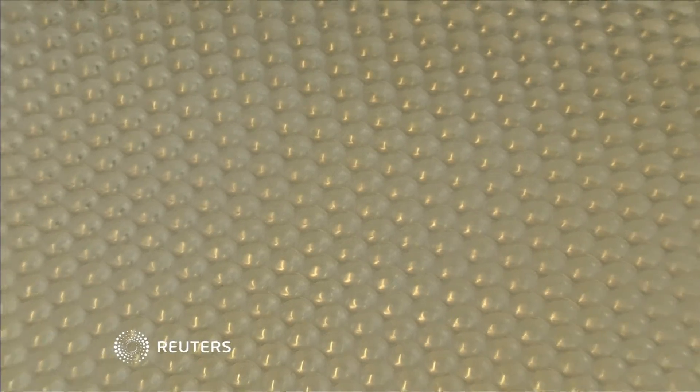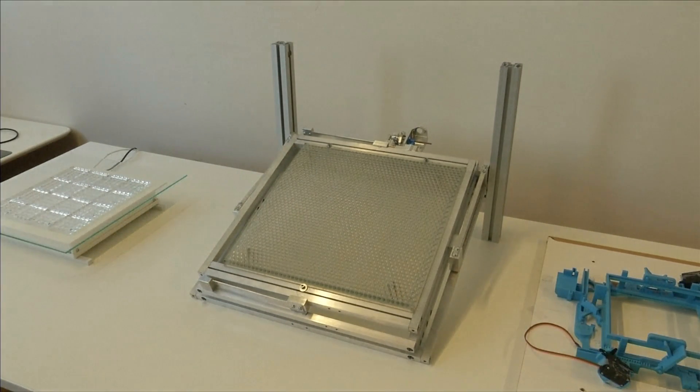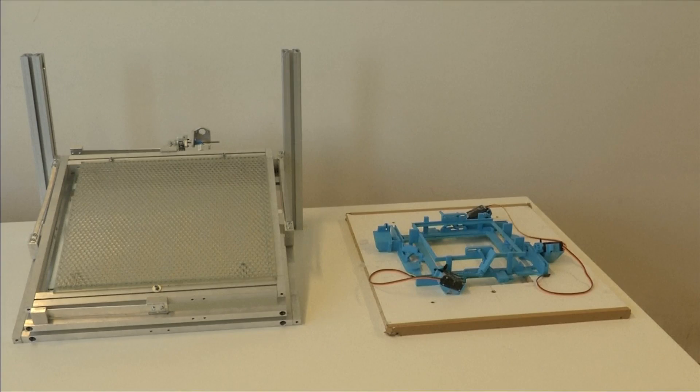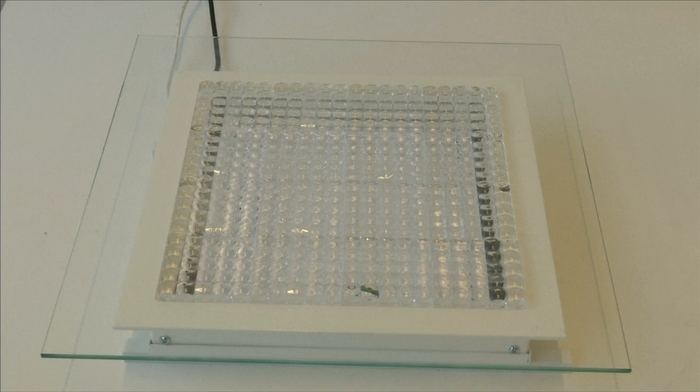Swiss startup Insulite says its solar panels double the yield achieved by other sun-powered technology. In independent tests, the panels reached an efficiency of 36.4%.